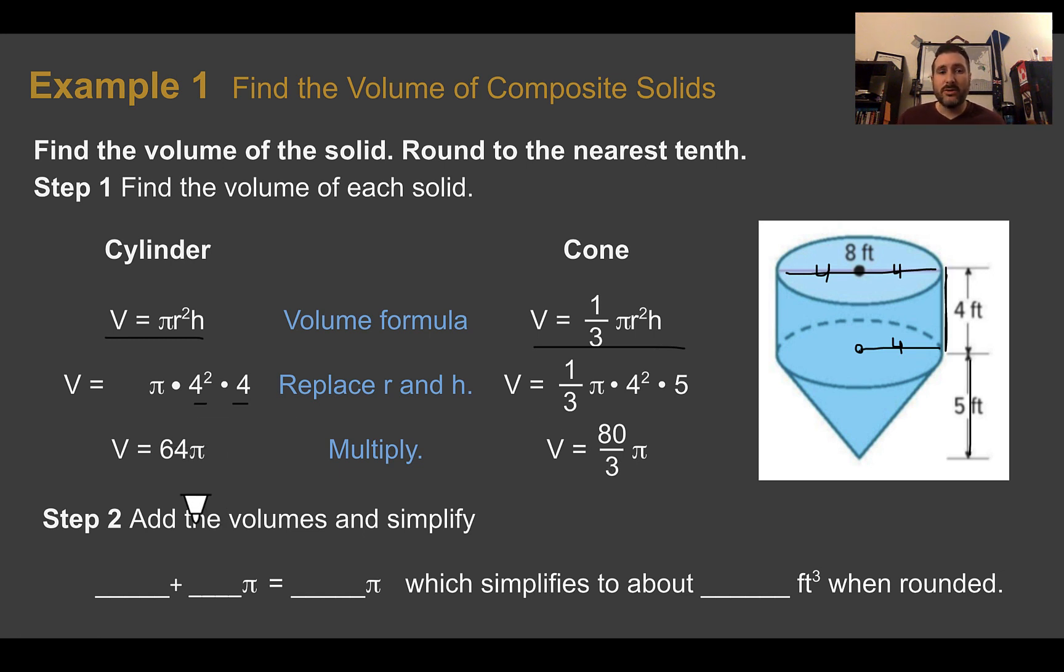Our next step, then, is to combine our two volumes back together so we can get the total volume of this composite shape. Adding them, 64π plus 80 thirds π gives us 272 thirds π. Then multiplying that out by 3.14, since it does say round to the nearest tenth, it would simplify to about 284.8 cubic feet.